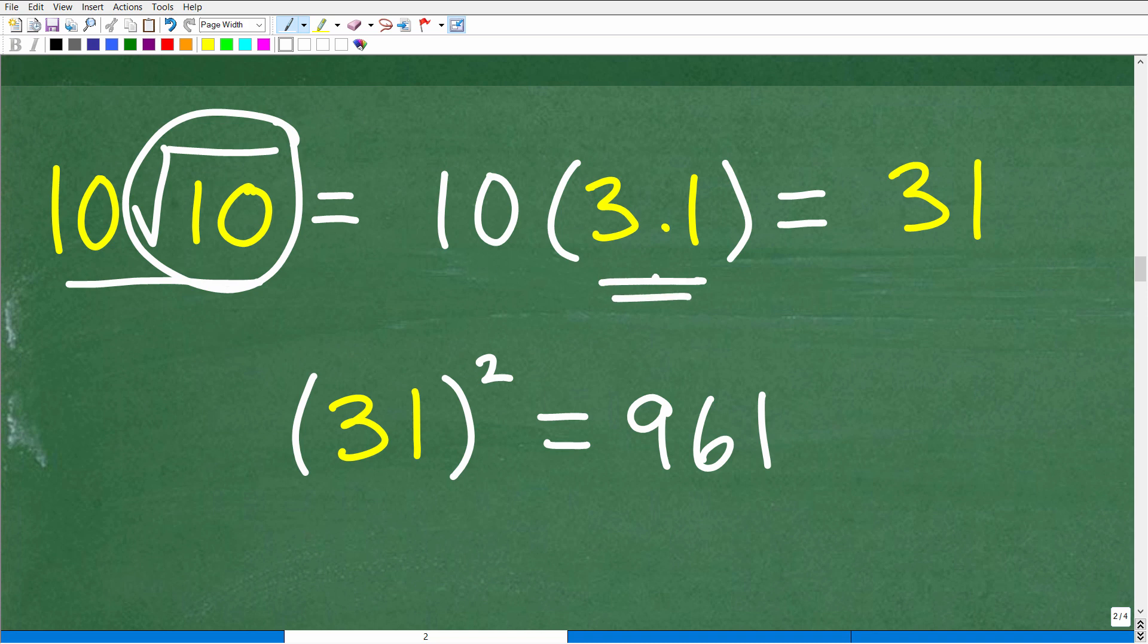So let's see how close we got. Well, 31 squared, 31 times 31 would be 961. So if you wanted to do this calculation, what would this answer tell you?